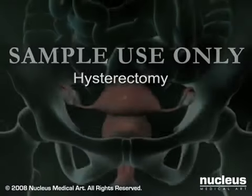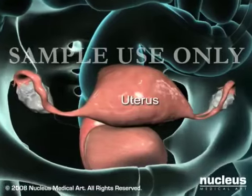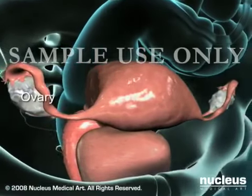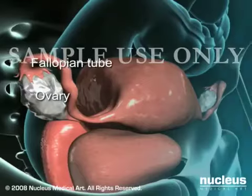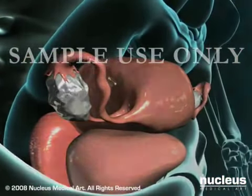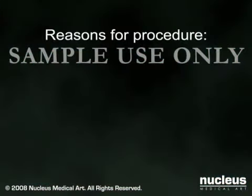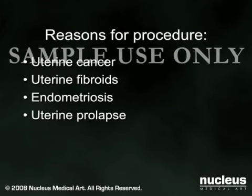A hysterectomy is the surgical removal of the uterus. When the ovaries and fallopian tubes are also removed, this is called a hysterectomy with salpingo-oophorectomy. A hysterectomy is done to treat uterine cancer, uterine fibroids, endometriosis, uterine prolapse, and other gynecological conditions.